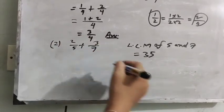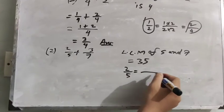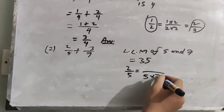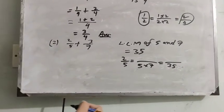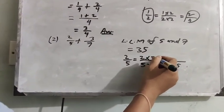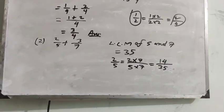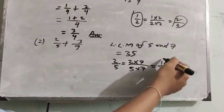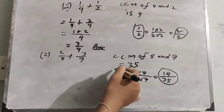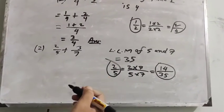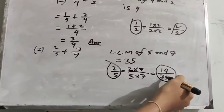For the first fraction, 2/5: the denominator 5 multiplied by 7 equals 35, and 2 multiplied by 7 equals 14. So 14/35 is the equivalent fraction of 2/5. We can say that 2/5 equals 14/35.